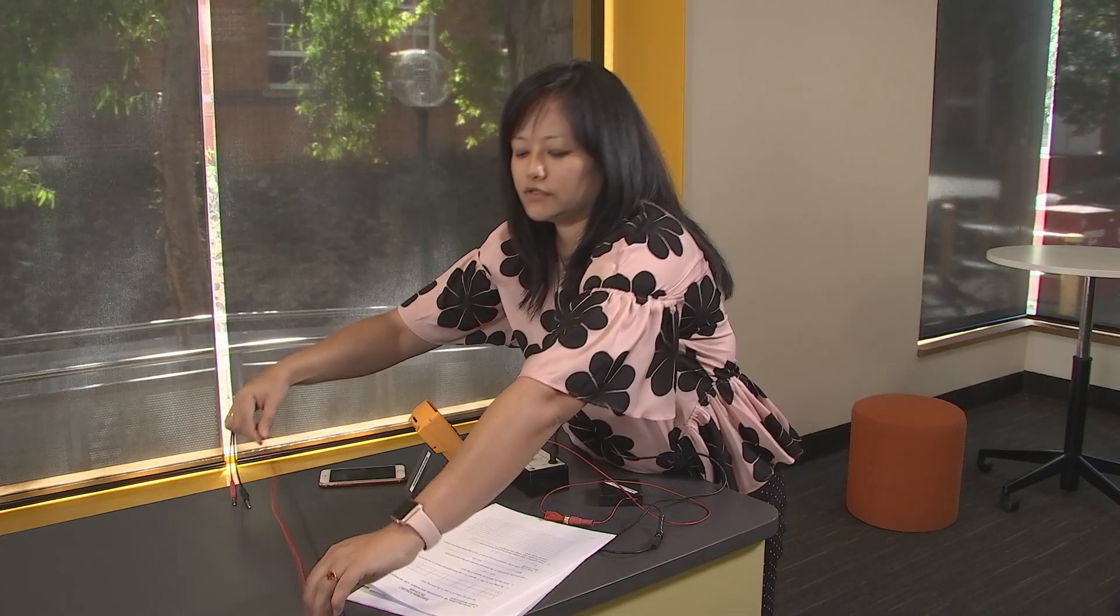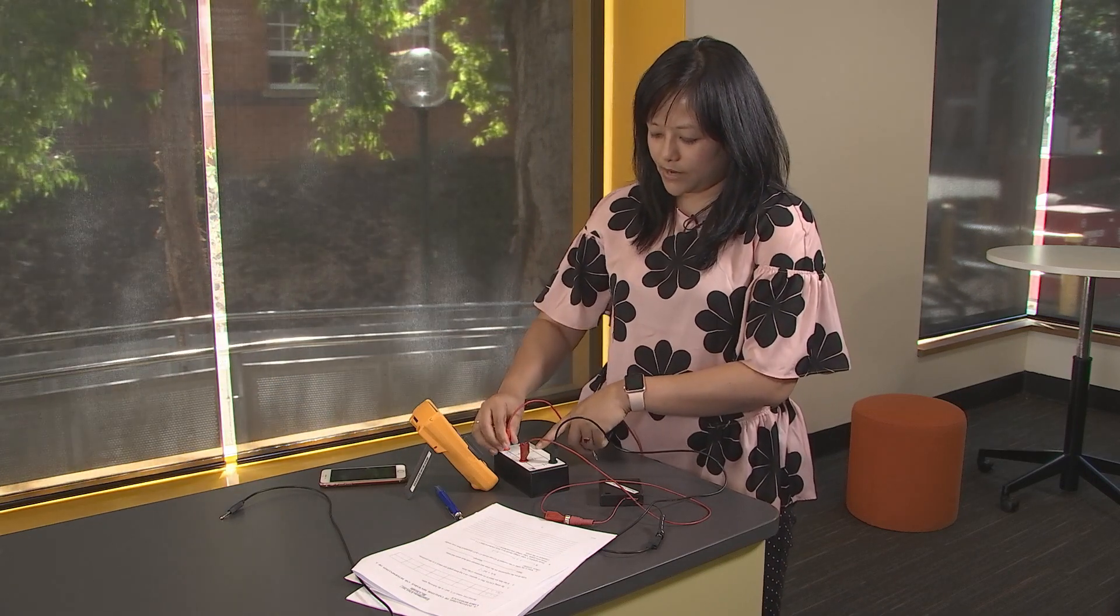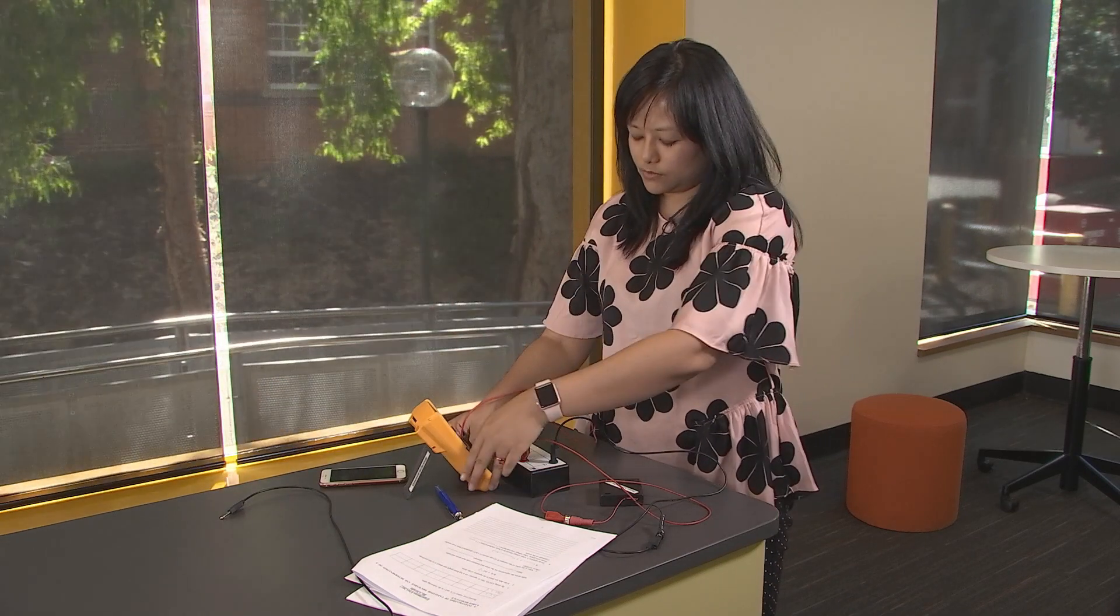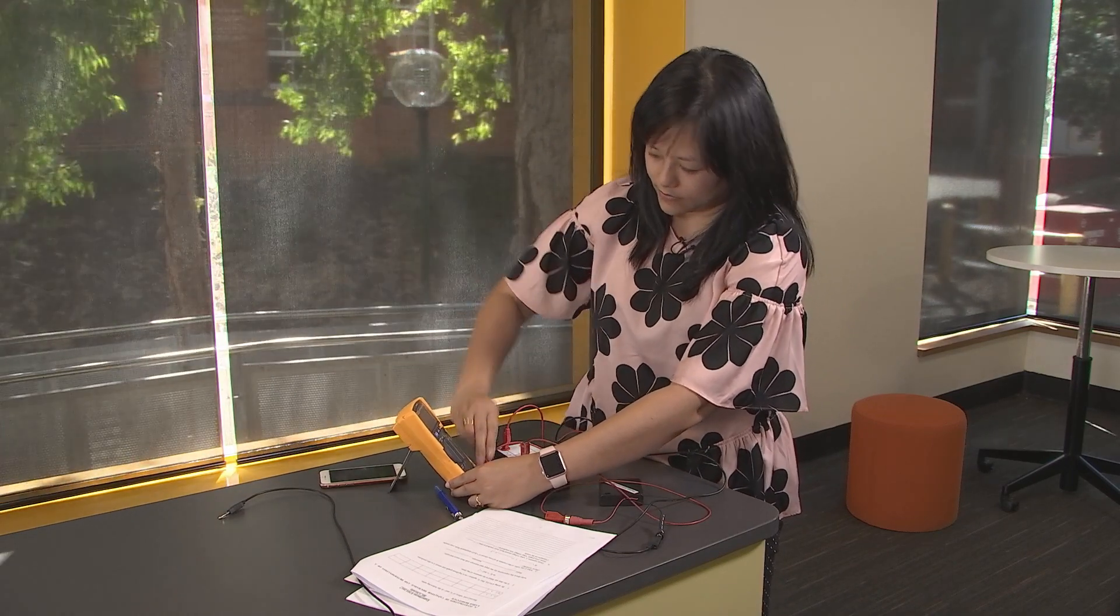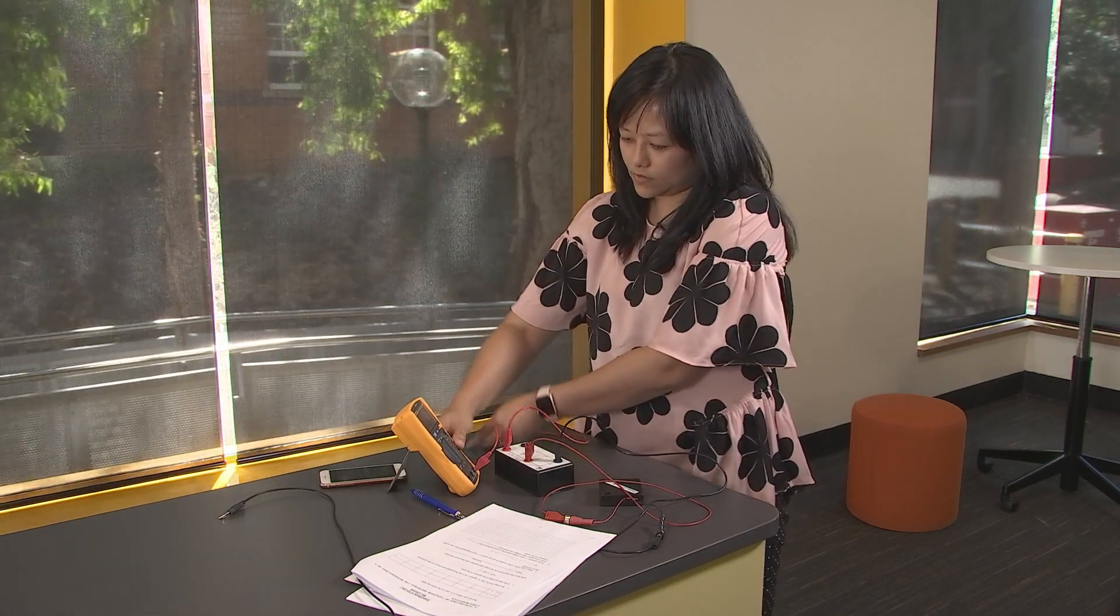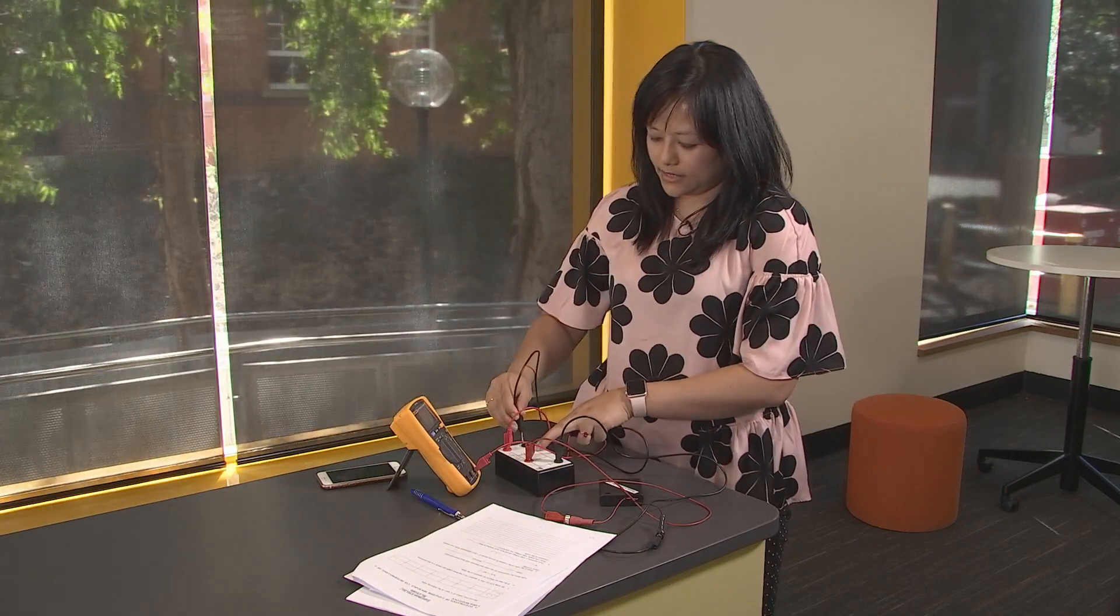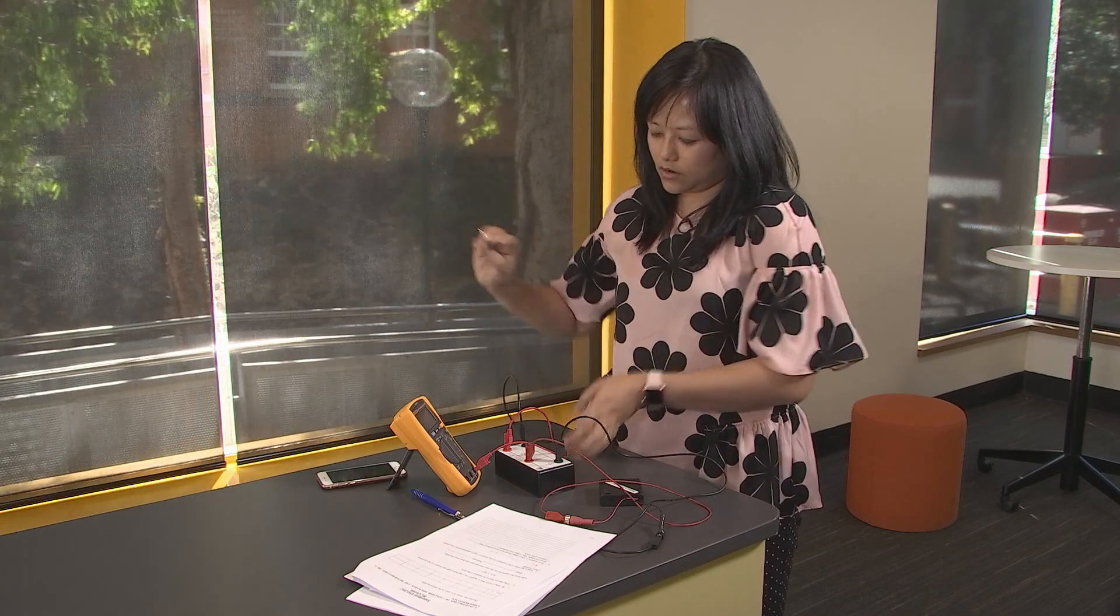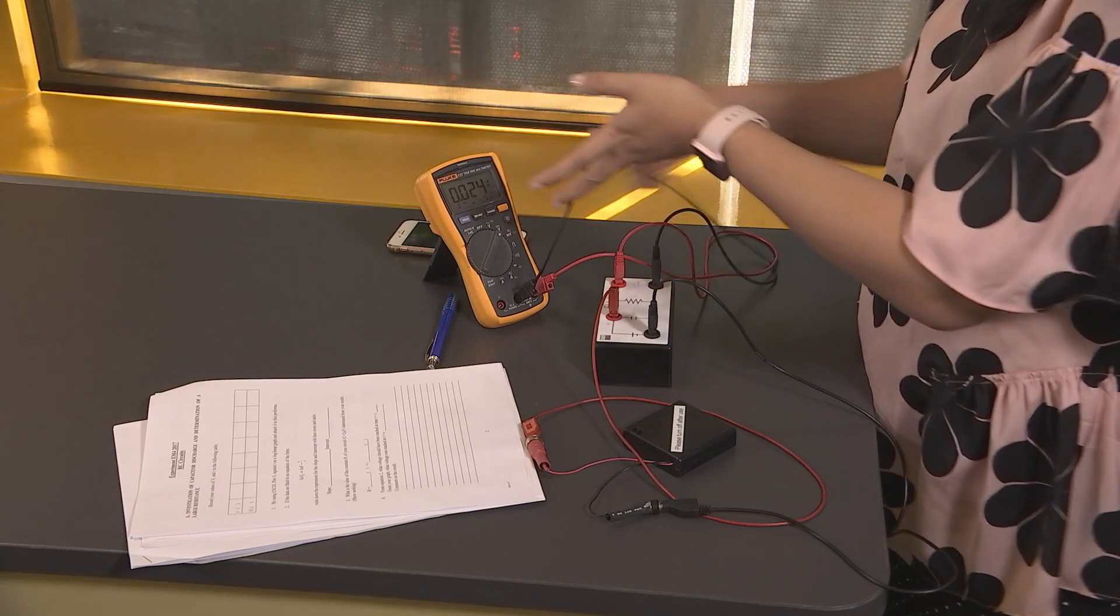Next I am going to connect the positive side of the capacitor to the multimeter. And next I am going to connect the negative side of the capacitor to the common of the multimeter.